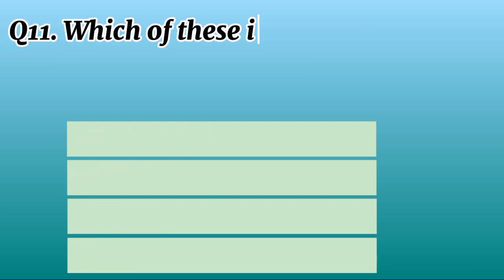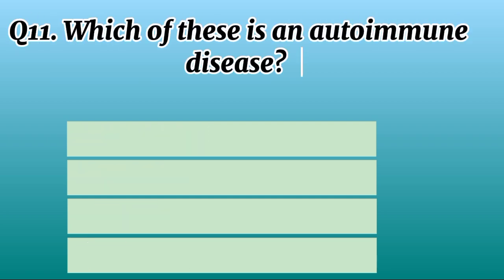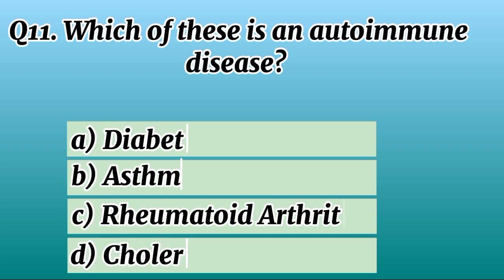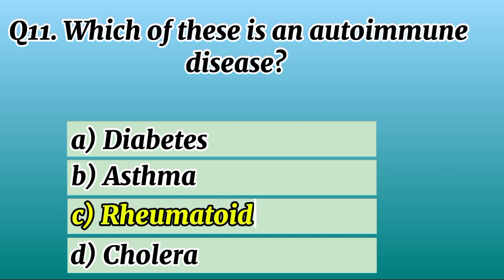Question 11. Which of these is an autoimmune disease? Correct option C: Rheumatoid arthritis.